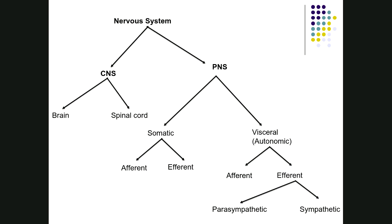Each division has two branches: the afferent branch, which is sensory, and the efferent branch, which is motor. We have a somatic efferent and a visceral or autonomic efferent. Unlike the somatic efferent, the visceral efferent can be further divided into two divisions: the sympathetic and the parasympathetic.